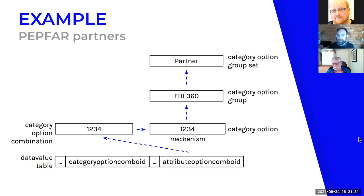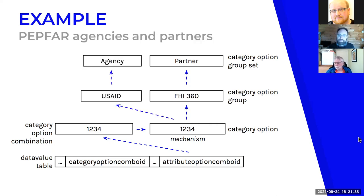The same approach is used for agencies: category options are grouped into a category option group (e.g., USAID), and those groups are placed into a category option group set called 'agency.'